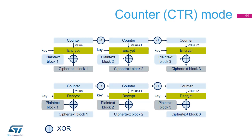The counter mode, known as CTR mode, uses the AES core to generate a key stream. The keys are then XORed with the plain text to obtain the ciphertext. Unlike ECB and CBC modes, no key scheduling is required for the CTR decryption, since in this chaining scheme the AES core is always used in encryption mode for producing the key stream or counter blocks.